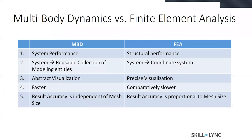In MBD simulations we concentrate on the performance of the entire system. For example, if you consider the simulation of a robotic arm, we obtain outputs such as forces, acceleration, velocities, and torques in the joints. Whereas in FEA we are more focused on the structural performance of the entire system.